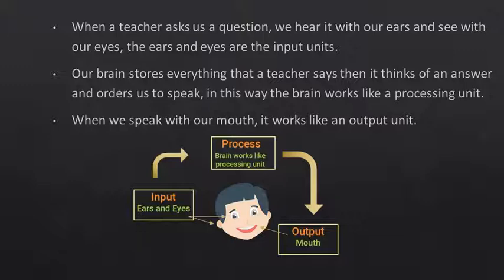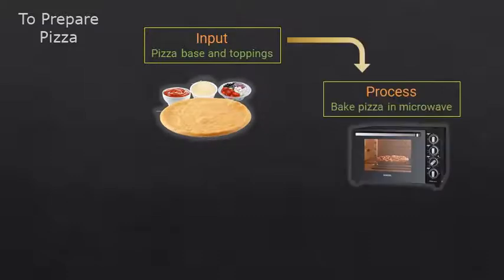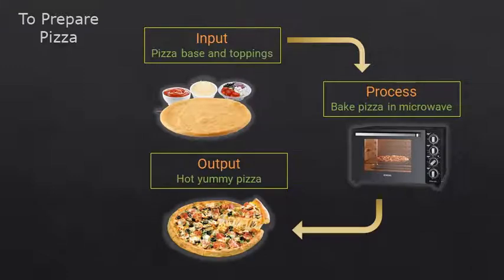Let us take some daily life examples to understand. To prepare pizza: putting pizza base with toppings in the microwave is input, baking pizza in the microwave is process, and hot yummy pizza is output.